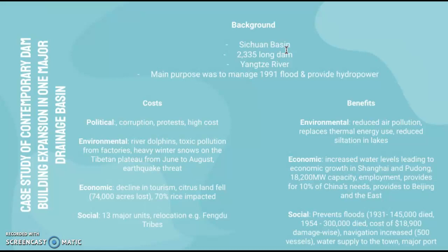The costs of the Three Gorges Dam include political issues such as reports of corruption and protests, as well as a high cost for the government. Environmental impacts include effects on the river dolphin species, toxic pollution from factories, and heavy winter snows on the Tibetan Plateau from June to August, which can create unfavorable conditions due to snowmelt. There is also an earthquake threat in the area.